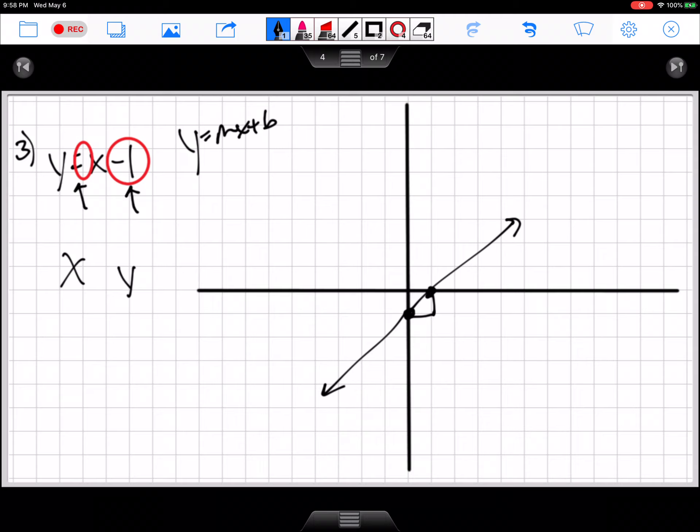Now you can still use the XY table. Maybe use negative 1, 0, 1. So when X is negative 1, Y equals negative 2. There's that point. We didn't have it on the graph, but it's on that graph if we extend it. When X is 0, Y is negative 1. That's that point right there that we had before. And when X is 1, Y is 0. That's that point right there. So we still use two of the same three points. We just have a shortcut we can use here with the Y-intercept and the slope because remember, we can make a line out of two points.